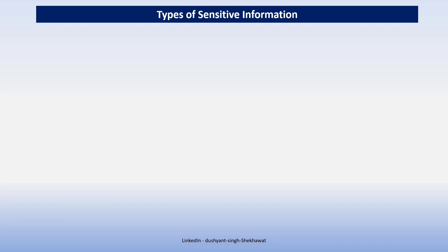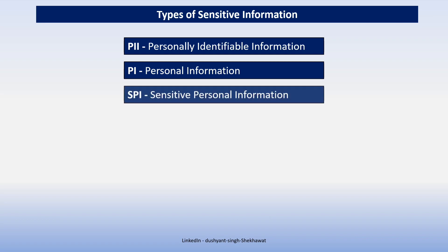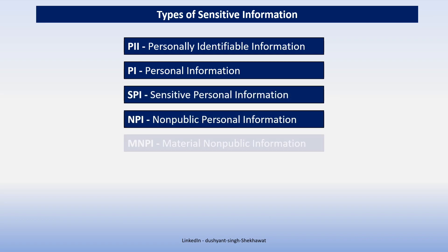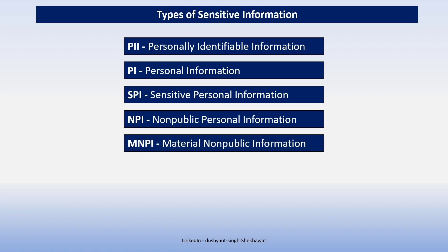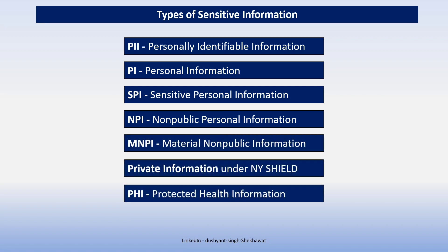There are different types of sensitive information. Today we will cover personally identifiable information, personal information, sensitive personal information, non-public personal information, material non-public information, private information, and protected health information. These are some types of sensitive information, and there can be others across the globe and different geographical regions.